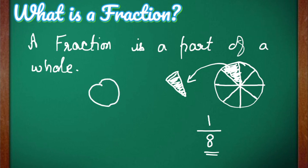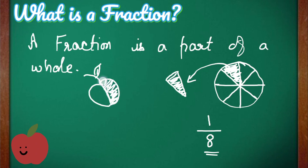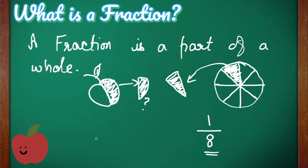For the second example, let us take an apple. If this apple is divided into two equal parts and one part has been eaten, then half of the apple is eaten and half of the apple is remaining. To write this eaten part in the form of numbers, we write it as 1 out of 2 pieces.